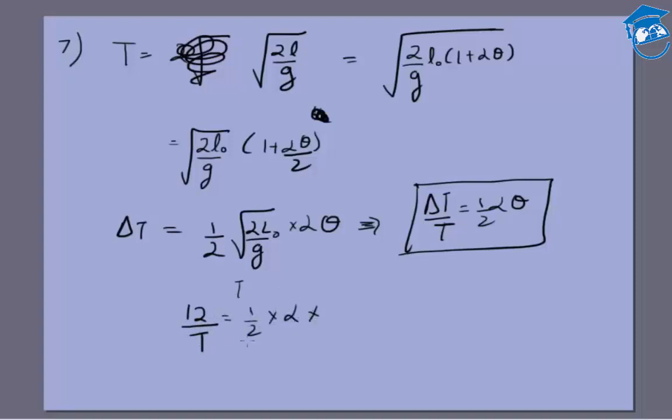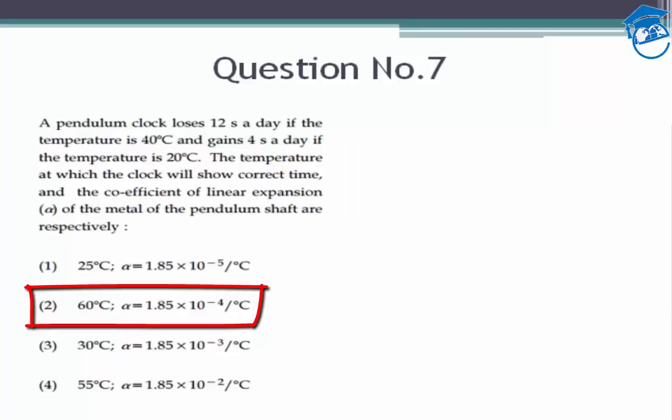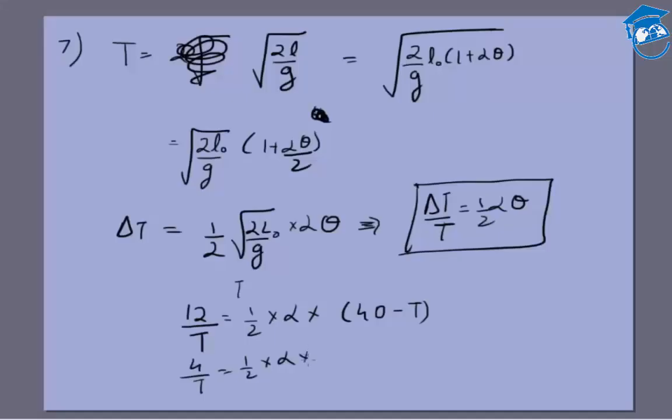Because it loses 12 seconds per day, this equals half into alpha into theta. Now since the time period is increasing, what we have done is increase the temperature to 40 degrees, so here what we should have is 40 minus T. Similarly, in the second case we'll have 4 by T equals half into alpha.